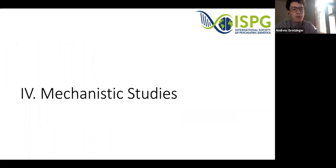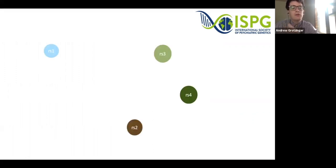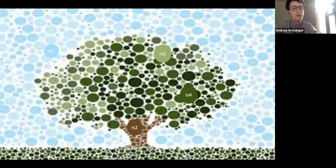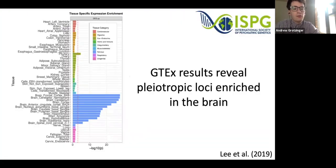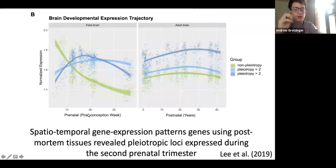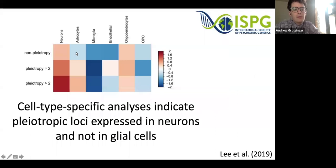Before that, I want to talk about mechanistic or functional studies, which look to take hundreds of genetic variants and understand the biological picture by lumping them into functional categories such as when or where genes are expressed. In the cross-disorder paper, pleiotropic loci are generally enriched in the brain as shown by GTEx results. Using spatiotemporal gene expression patterns, pleiotropic loci are enriched during the second prenatal trimester. And using cell type-specific analyses, they are enriched in neurons but are not as enriched in microglia.